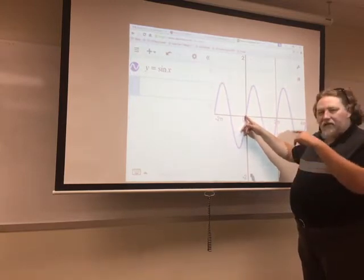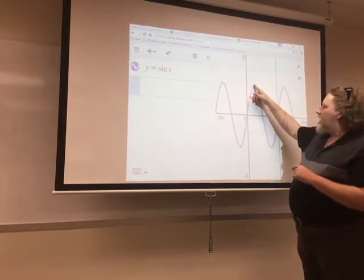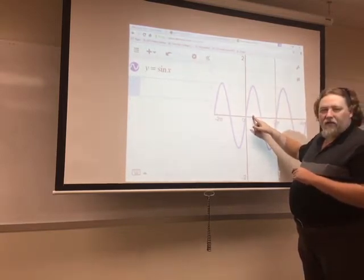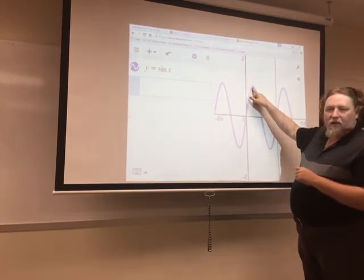And as my angle gets bigger and bigger, sine gets bigger and bigger, until I get to where the angle is pi over 2. Because at pi over 2, sine has the biggest value you can have. It's equal to 1.